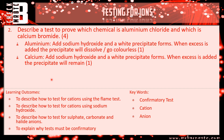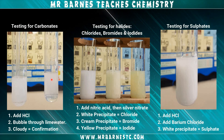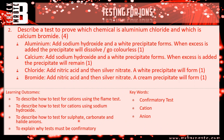The second part is the anions — a chloride and a bromide. Add nitric acid then silver nitrate. A cream precipitate confirms bromide, and a white precipitate confirms chloride. So for chloride your mark is for adding nitric acid then silver nitrate and getting a white precipitate, and for bromide it's a cream precipitate.